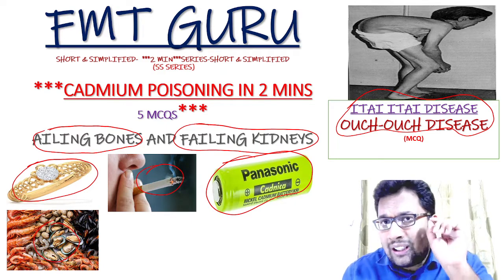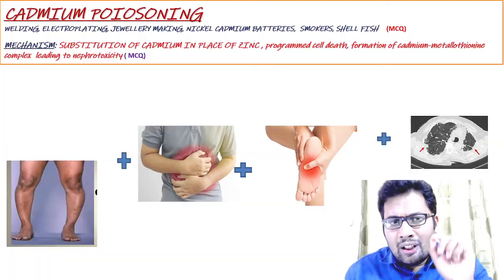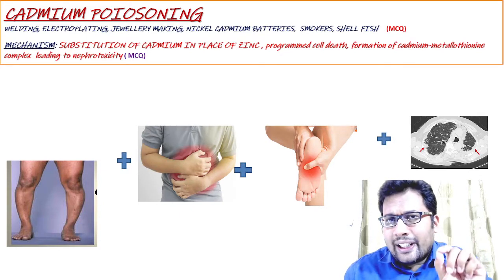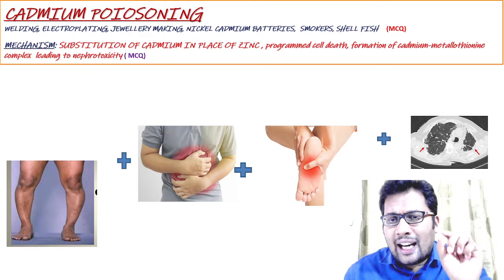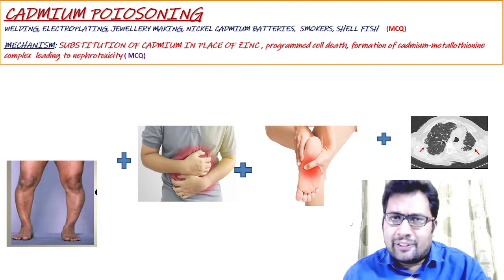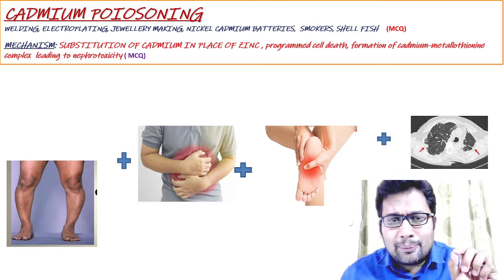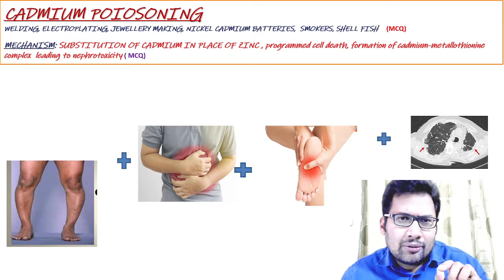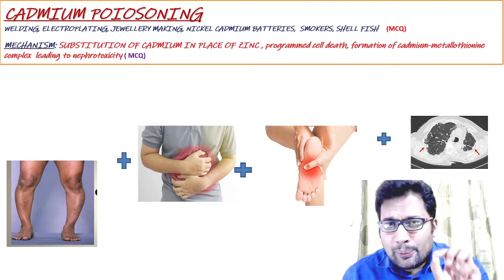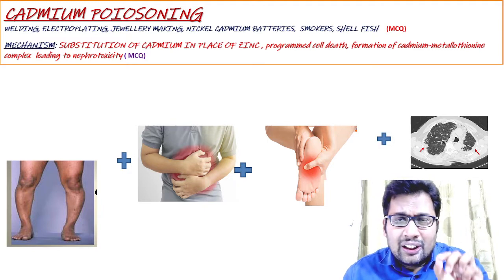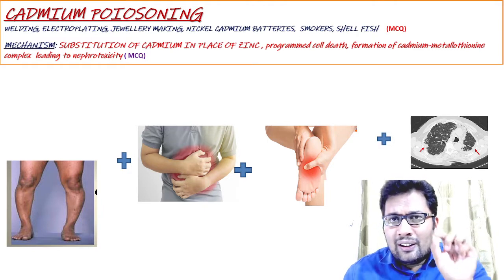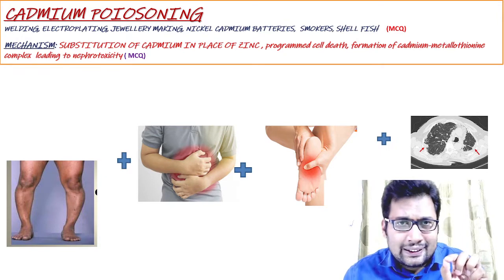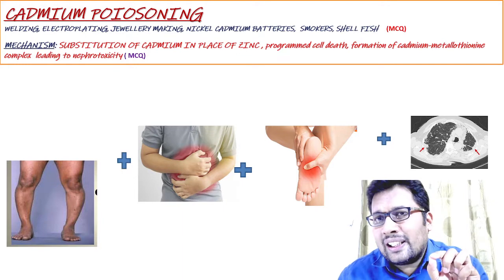Let us discuss the clinical features. The sources of cadmium include welding, electroplating, jewelry making, nickel-cadmium batteries, smokers, and shellfish. The mechanism involves substitution of cadmium in place of zinc, which leads to weak bones, osteomalacia, and fractures. It also causes programmed cell death and formation of a cadmium-metallothionein complex, leading to nephrotoxicity and kidney failure.